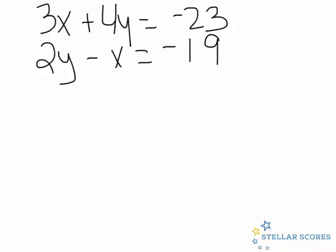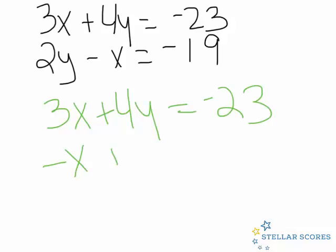Let's rewrite them so we get like terms together. So I'm going to write 3x + 4y = -23, and then I'm going to do -x + 2y = -19.